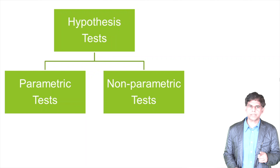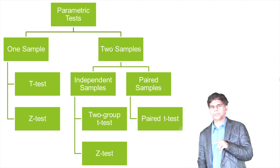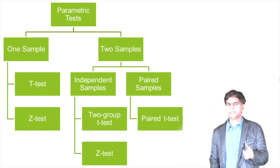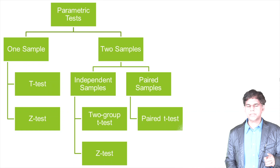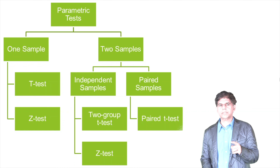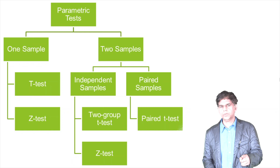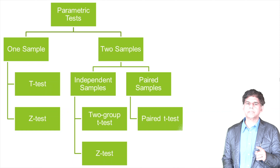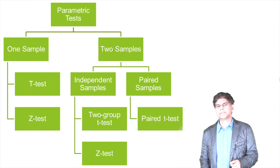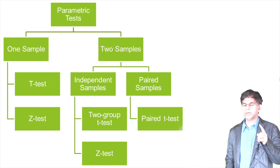When you look at the parametric tests, there are one-sample and two-sample tests. For one-sample you have the t-test and z-test. For two-sample you have independent samples and paired samples — a two-group t-test, a paired t-test, and the z-test. We're going to go through each one.